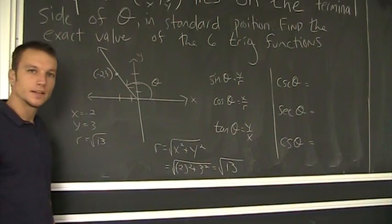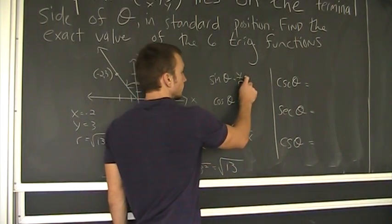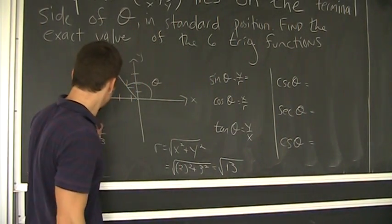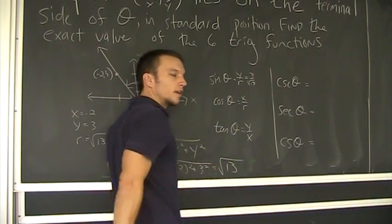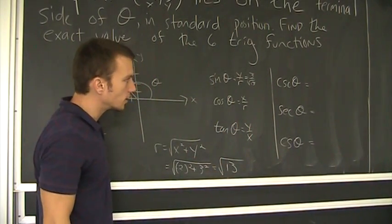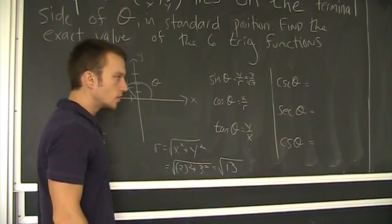Now, I just plug it into my definitions and I'll be done. Sine of theta, y equals 3 over root 13. I shouldn't say done. Almost done. I got to rationalize that denominator.